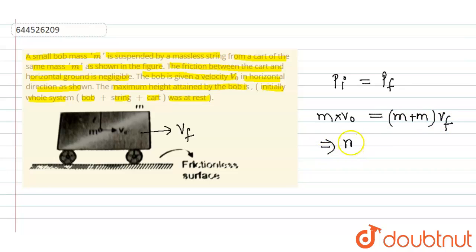Now I can write m v naught equal to 2m vf. So cancelling m and m, I can write vf is equal to v naught upon 2.